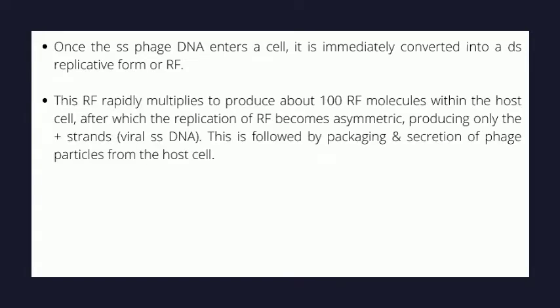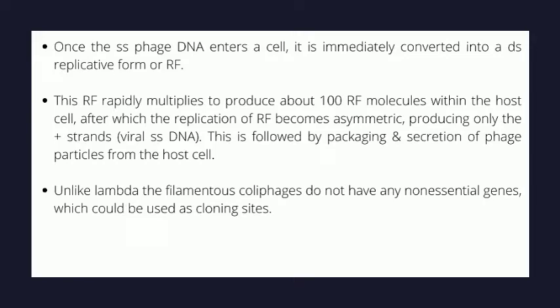Once the single-stranded phage DNA enters a cell, it is immediately converted into a double-stranded replicative form (RF). This RF rapidly multiplies to produce about 100 RF molecules within the host cell, after which the replication of RF becomes asymmetric, now producing only the plus strands — the viral single-stranded DNA. This is followed by packaging and secretion of phage particles from the host cell.